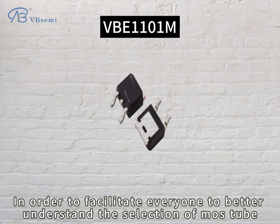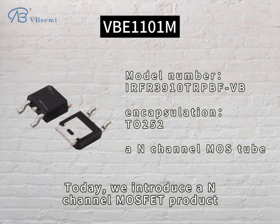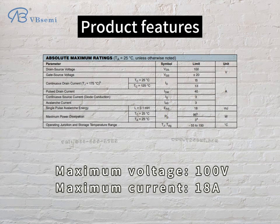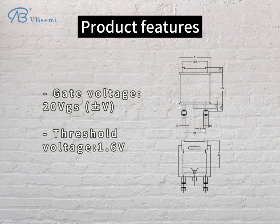In order to facilitate everyone to better understand the selection of MOSFETs, today we introduce an N-Channel MOSFET product, model number EUR43910 TRPBFVB. Maximum voltage is 100V, maximum current is 18A. Gate voltage is 20V GS(V), and the threshold voltage is 1.6V.